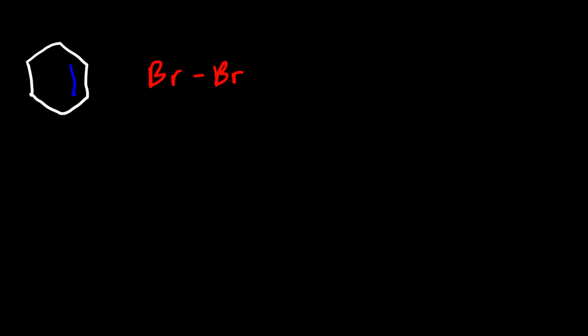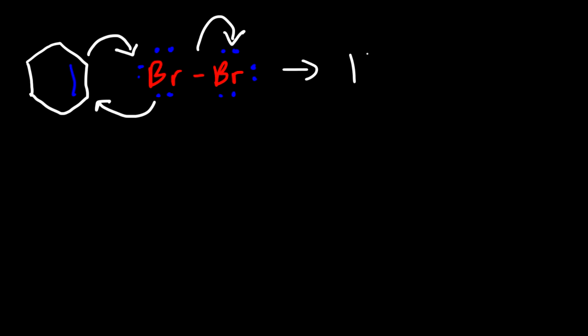Let's start with cyclohexene and react it with Br2, bromine. Each bromine atom has three lone pairs attached to it. The double bond is the nucleophile and it's going to attack the electrophile, which is bromine, expelling a bromide ion in the process. This bromine also attacks the double bond, and so what we're going to get is a cyclic bromonium ion intermediate.